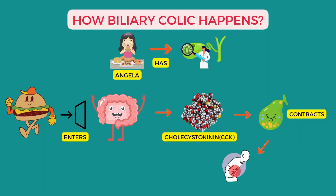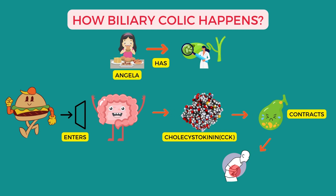Let us say Angela has a gallstone in her gallbladder and she ate a delicious burger for lunch. As the burger enters the duodenum, the cells of the duodenum are stimulated to release a hormone called cholecystokinin, or CCK. Breaking down the name, the word 'cholecysto' refers to the gallbladder and its associated ducts. Therefore, the hormone cholecystokinin acts on the gallbladder by stimulating it to contract and release bile.